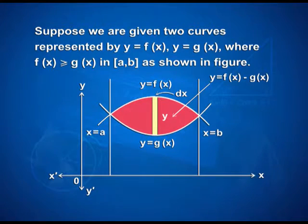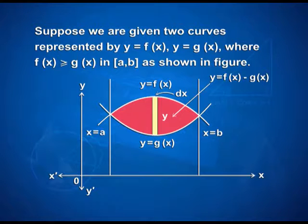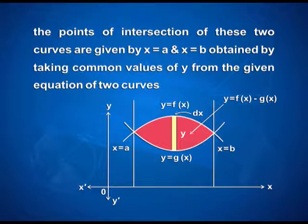Suppose we are given two curves represented by y is equal to f(x) and y is equal to g(x), where f(x) is greater than or equal to g(x) in the closed interval [a, b] as shown in the figure. We have two curves with a width dx and height equal to f(x) minus g(x). The points of intersection of these two curves are given by x is equal to a and x is equal to b, obtained by taking common values of y from the given equations of the two curves.